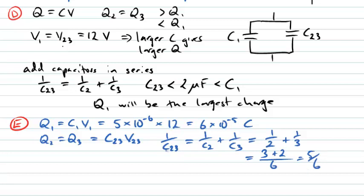We could add those two fractions over a common denominator of 6. 1 over 2 would give me 3 sixths and 1 over 3 would give me 2 sixths, so I've got 5 sixths. That's 1 over C23 is 5 sixths, so C23 will be the reciprocal of 5 sixths, that is 6 fifths or 1.2 microfarads.